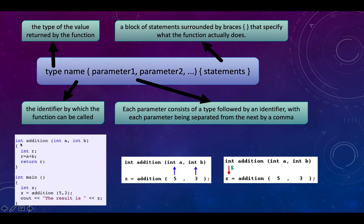So again, we have a type that defines the type of the return value of the function, a function name that is an identifier by which the function can be called, and input parameters — you have to define the type for each one. In our case both are integer, but you can have integer, float, character, bool, or whatever you need. After calling the function, the function executes and the return value is stored in whatever variable you use to capture the result. It's as easy as that.